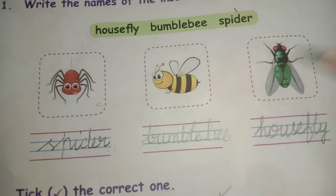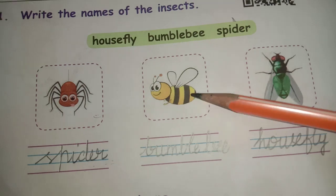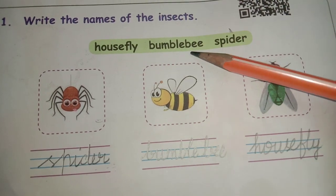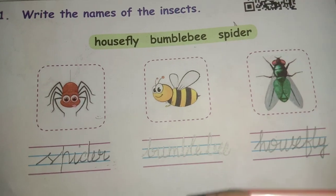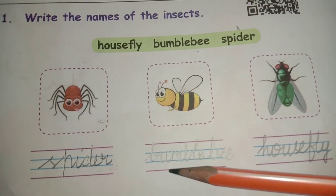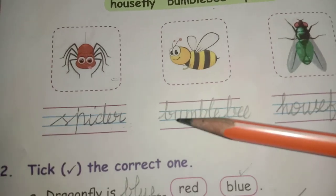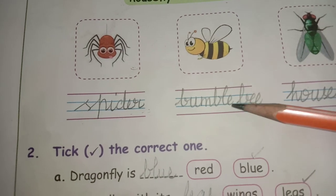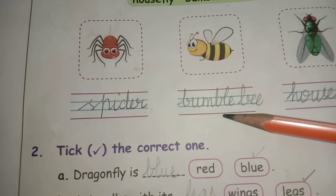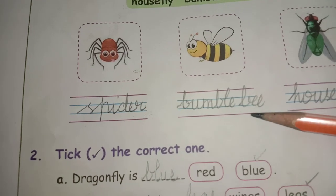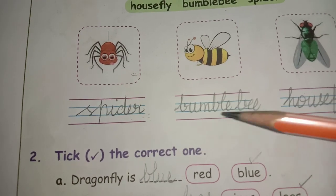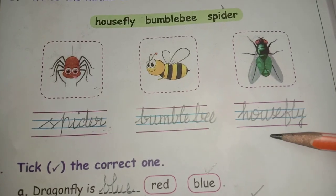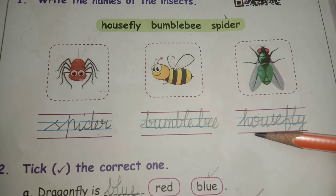Then the second one is bumblebee. Where is it? Yes, here it is. What is the spelling for bumblebee? B-U-M-B-L-E-B-E-E, bumblebee. And the third one is housefly.